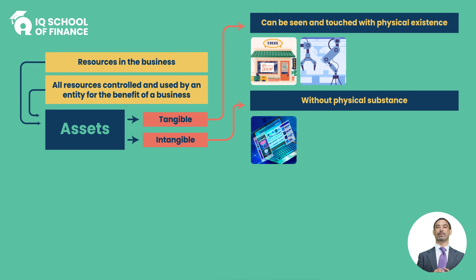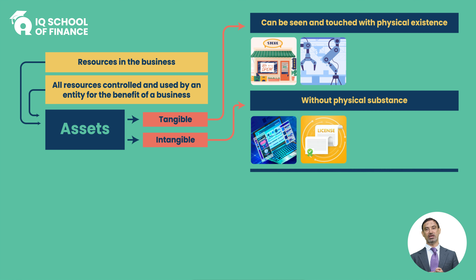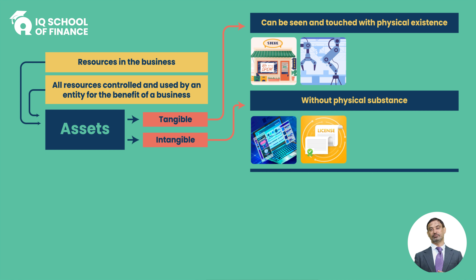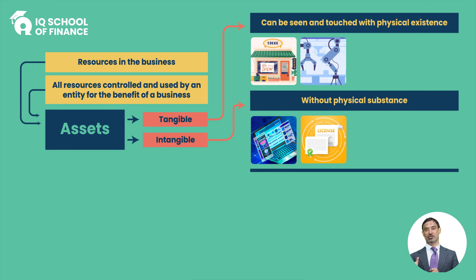Intangible assets के examples: goodwill, copyrights, patents, license, import license - they all are called intangible assets. इसकी एक example: आप कोई fast food restaurant खोलें तो आप किसी branded name के साथ जुड़ना चाहें तो documentation और सारी legal formalities पूरी करनी होगी, और इसके बाद आपको rights मिलेंगे। वो तमाम ऐसे assets जो के आपने किसी से rights खरीदे हों, फिर उसका benefit भी आपके पास आएगा और उसका control भी आपके पास होगा - they are called intangible assets।